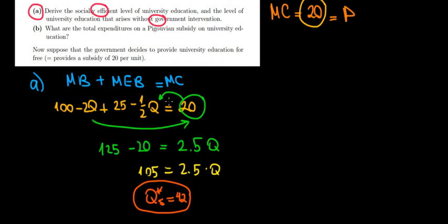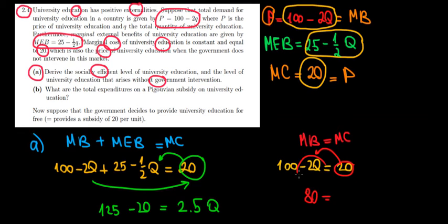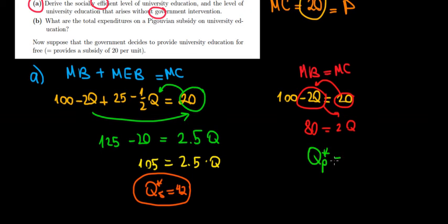Without government intervention, the university only considers its own benefit, so we set marginal benefit equal to marginal cost: 100 − 2Q = 20. Solving: 80 = 2Q, so the quantity under private production is 40 units. This is less than 42 because the university does not take into account its positive externalities, so it is under-producing.